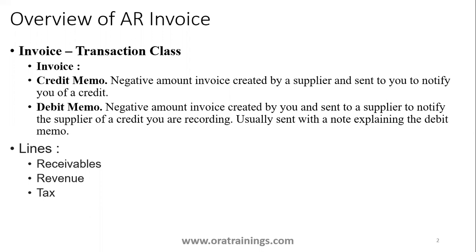Generally when you try to create an invoice there are different types you'll come across. One is a generic invoice, a credit memo, as well as a debit memo. These are the header information. Coming to the line information, in the lines generally you'll have three kinds of lines: receivables, revenue, and tax. The major concentration is on how we create from UI, what are the main tables involved, and the standard report of it.